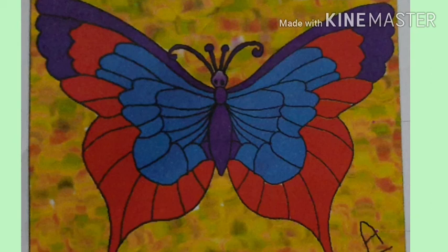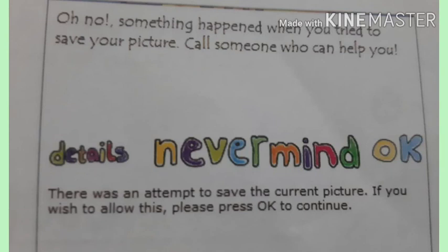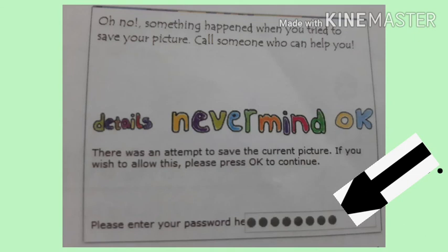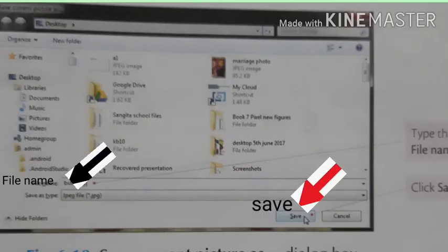Now let's understand how to save a picture. Step 1: Click on the save button. A dialog box appears. Step 2: Click OK. It prompts you to enter a password. As you can see in this picture, this action should be done by the parent or teacher. Step 3: The Save Current Picture As dialog box appears. Type the name of the picture in the file name bar and click on the save button, as you can see in this picture.